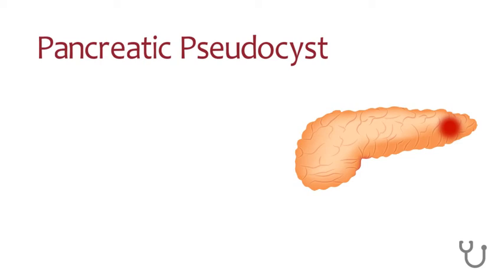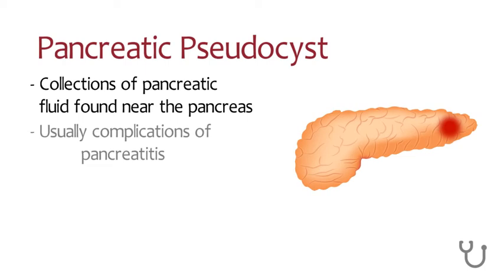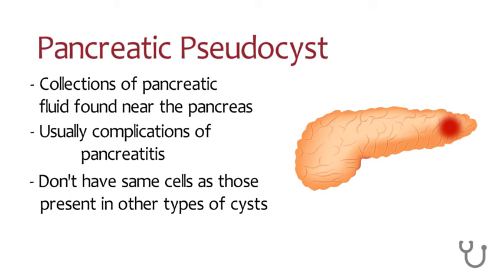Pancreatic pseudocysts are collections of pancreatic fluid found near the pancreas. They are usually complications of acute or chronic pancreatitis. Some medical professionals do not consider these to be real cysts, as they don't have the same cells as those present in other cysts — because of this, they are called pseudocysts.